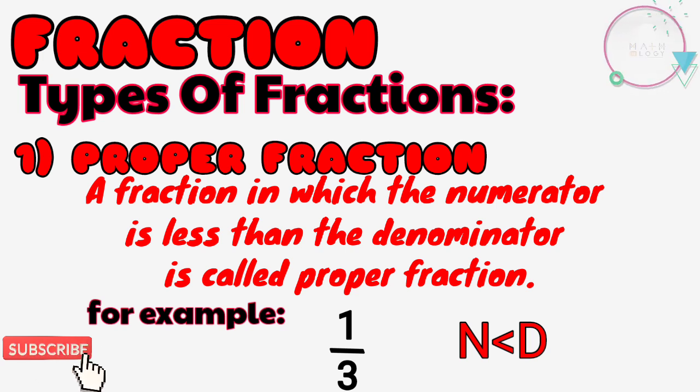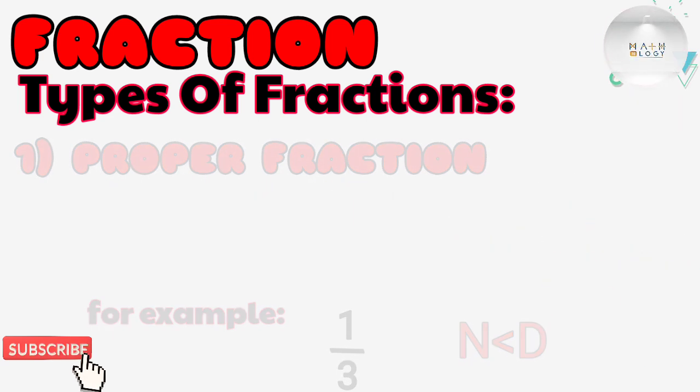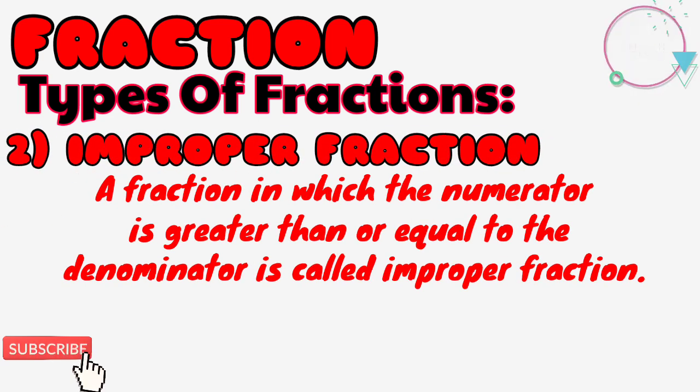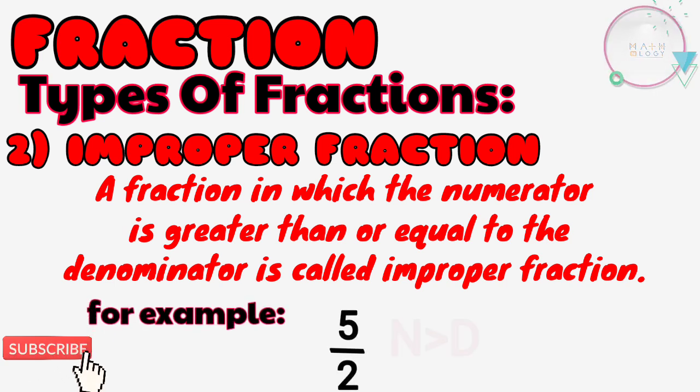The second kind is improper fraction. A fraction in which the numerator is greater than or equal to the denominator is called an improper fraction. For example, 5/2—here 5 is greater than 2, that's why it is an improper fraction. Another example: 4/4. 4 is equal to 4.